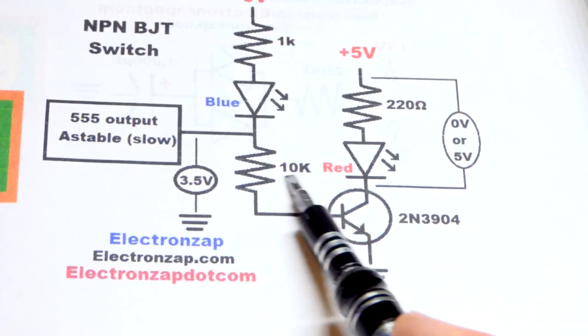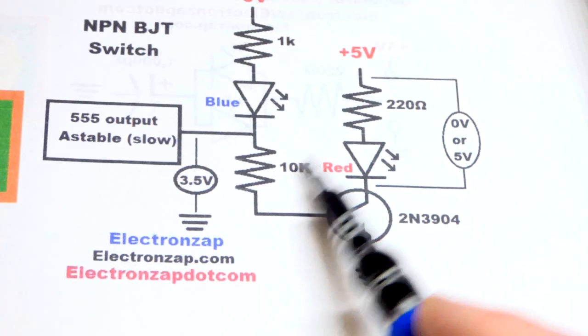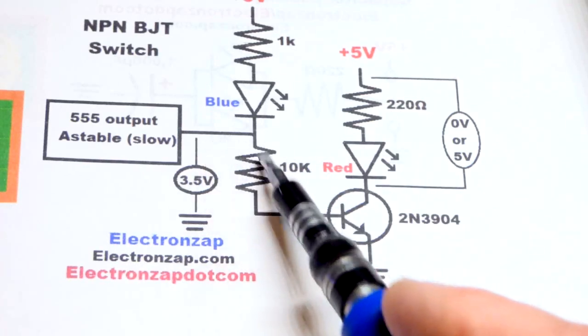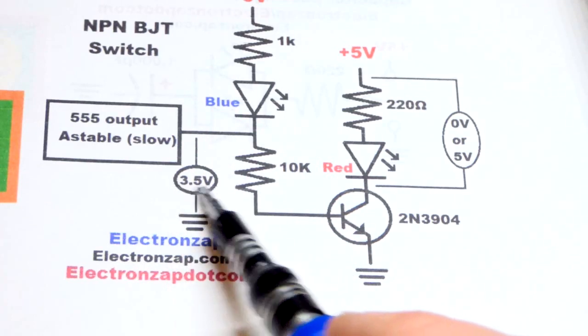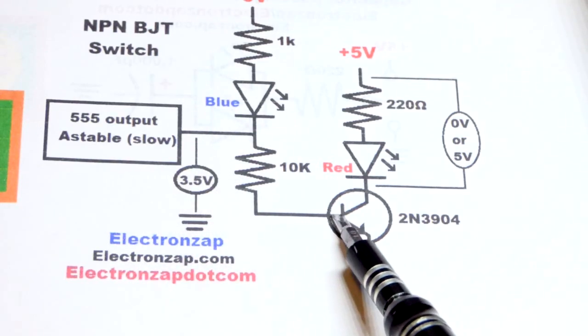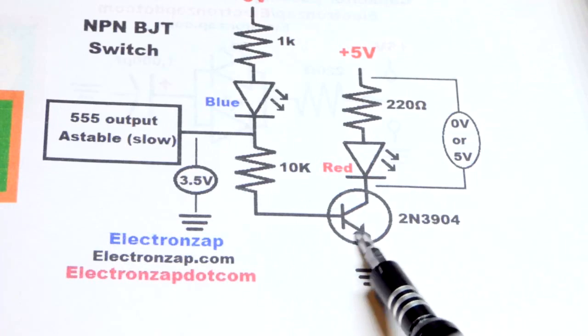So even though this is a high value resistor it's not about 200 times as high as that one. We should have enough current going through. Remember we'll have about 3 volts across it because that's 3.5 volts but this is a diode drop right here base to emitter.